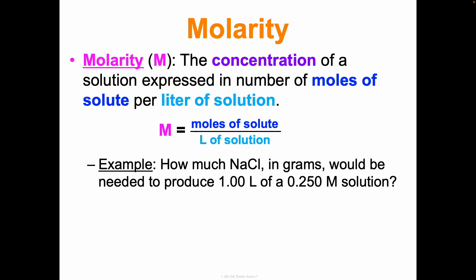We're not going to start by calculating molarity - we're going to start by finding moles, but what we really want is grams. To find grams we'll have to find moles first. This equation uses moles, but if you're practically making a solution in lab you're not measuring out moles - you're measuring out grams. So we'll bring back molar mass and converting between grams and moles, because practically in lab you'll need grams even though the equation uses moles.